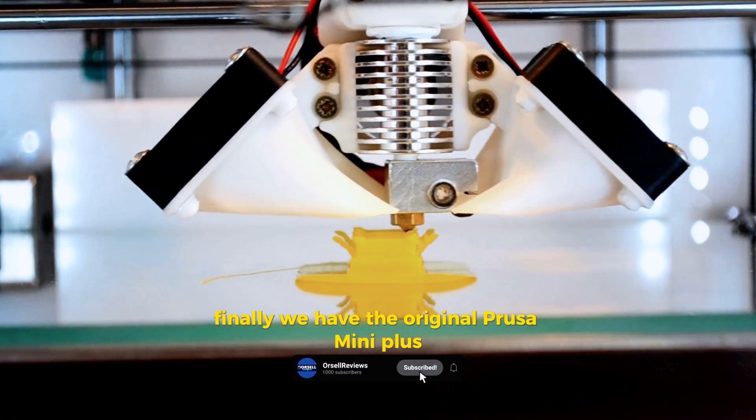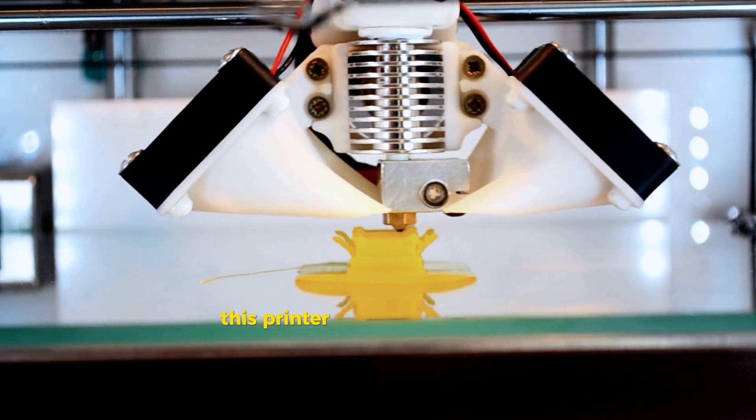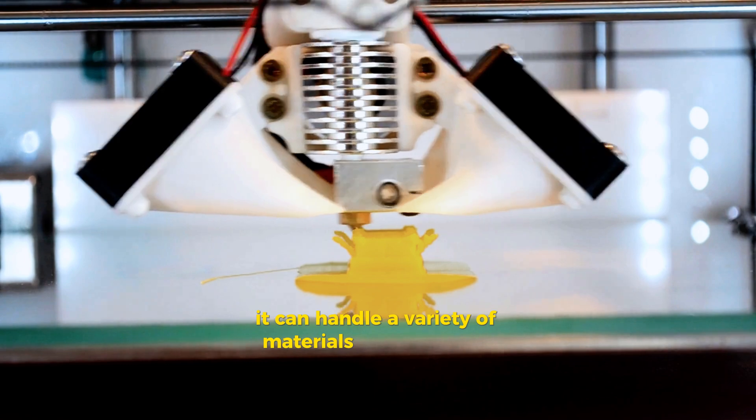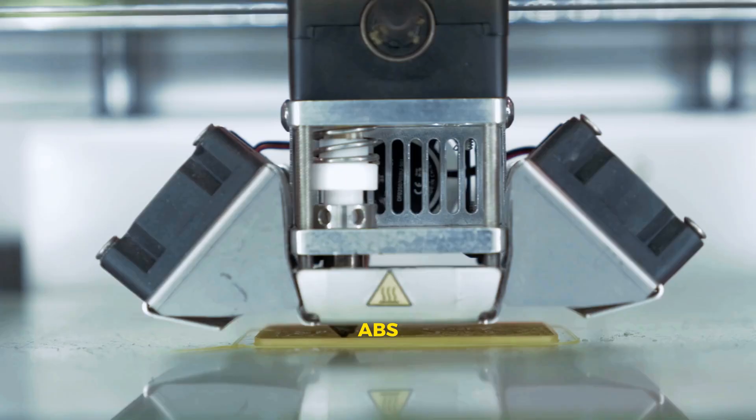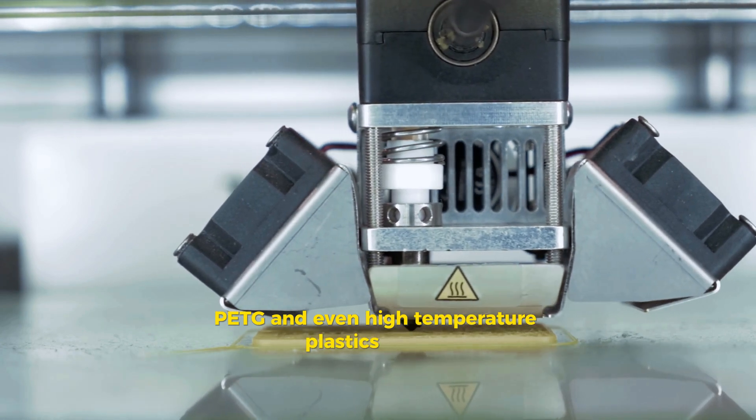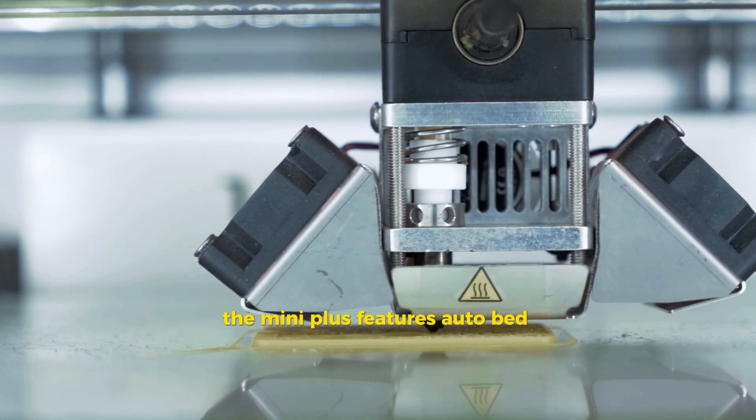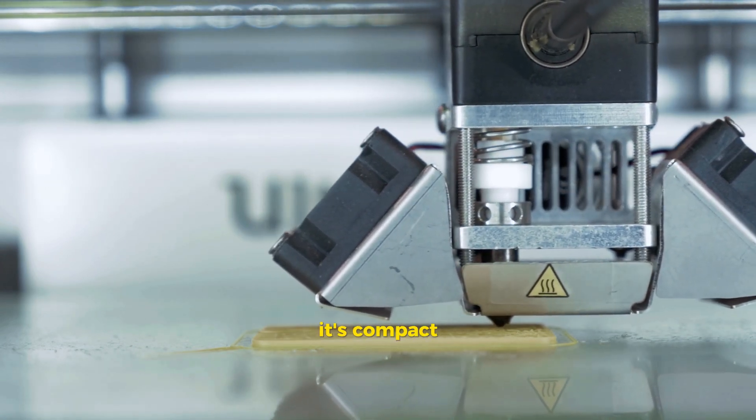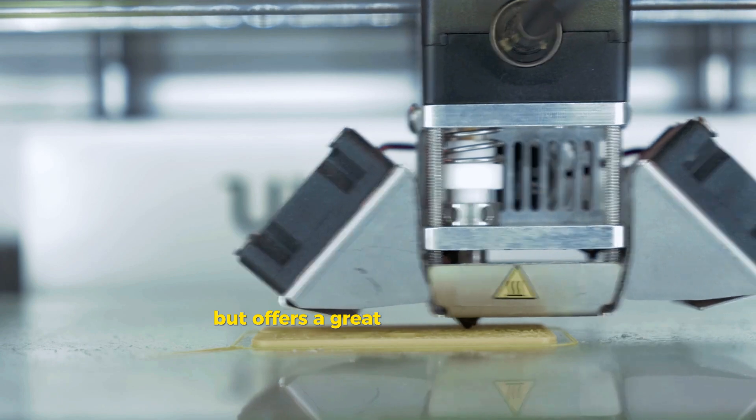Finally, we have the Original Prusa Mini Plus. Don't let its small size fool you—this printer delivers exceptional print quality. It can handle a variety of materials, including PLA, ABS, PETG, and even high temperature plastics like PC. The Mini Plus features auto bed leveling and a removable print bed, making it super easy to use.